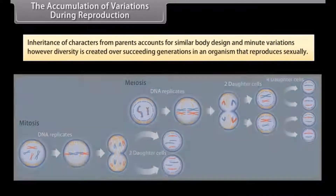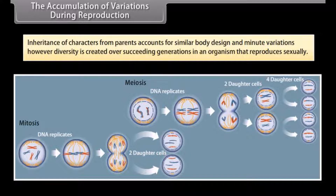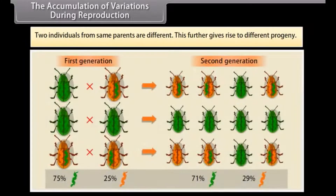Inheritance of characters from parents accounts for similar body design and minute variations. However, diversity is created over succeeding generations in an organism that reproduces sexually. Two individuals from the same parents are different, and this further gives rise to different progeny.